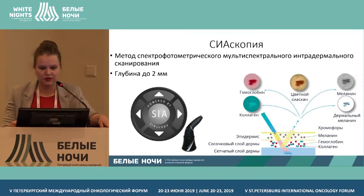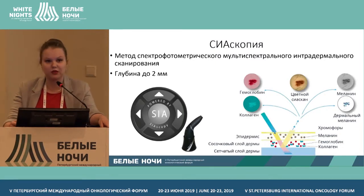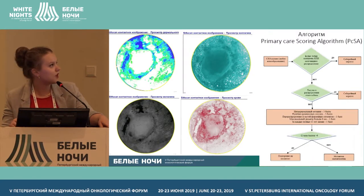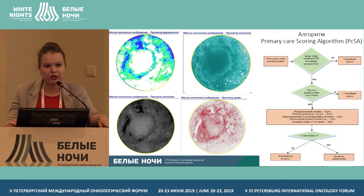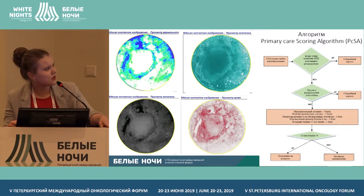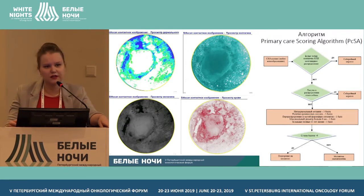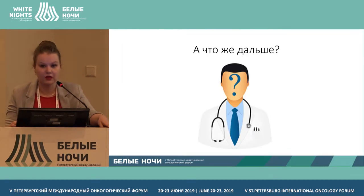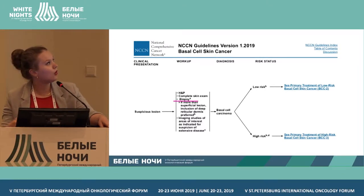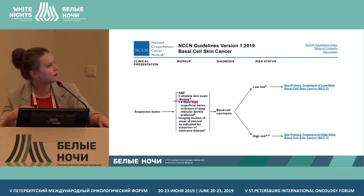An additional method to diagnose cutaneous neoplasms is spectrophotometric intradermal scanning. This allows assessment of melanin and collagen accumulation at a depth of two millimeters, using a diagnostic algorithm. Although it has smaller sensitivity compared to other methods.